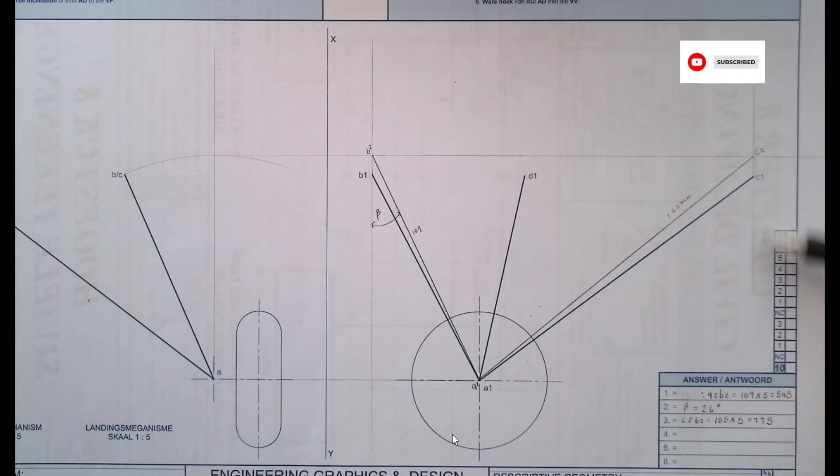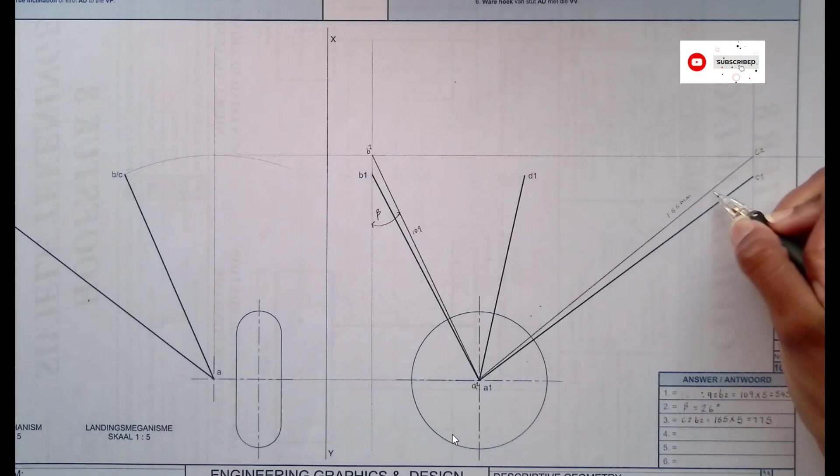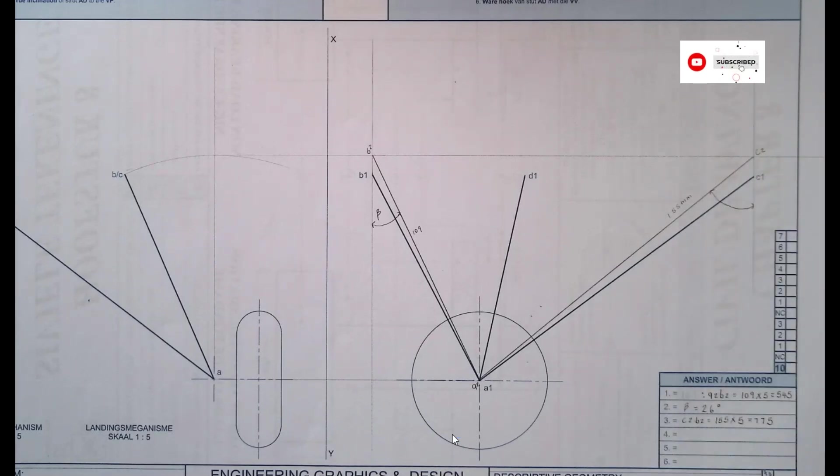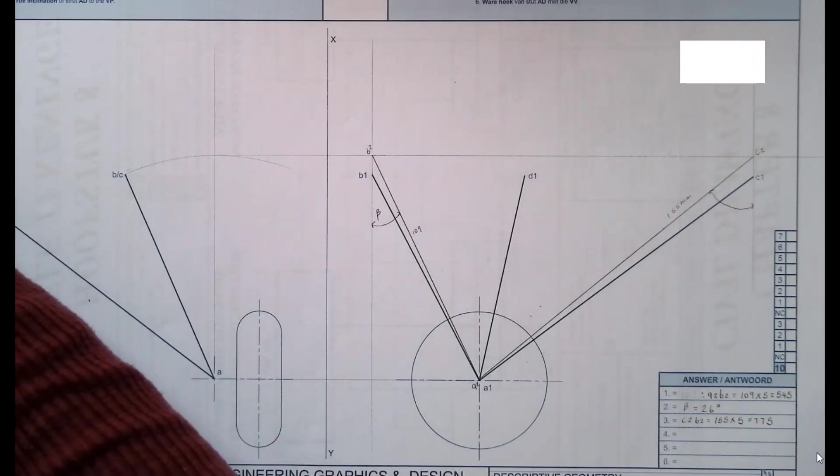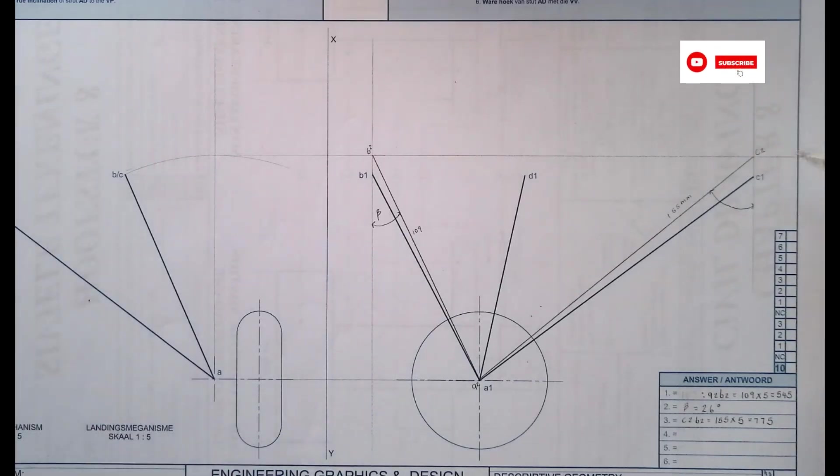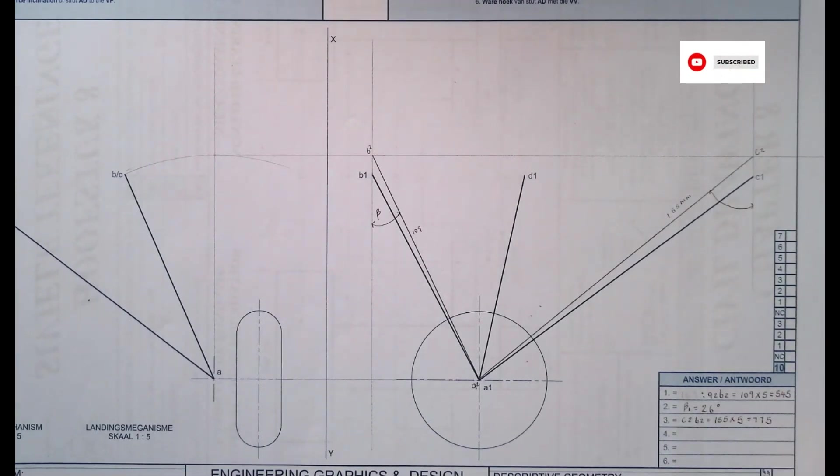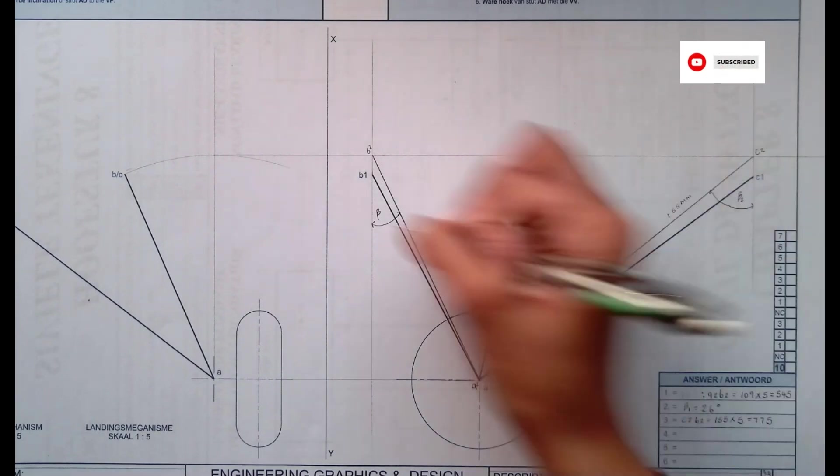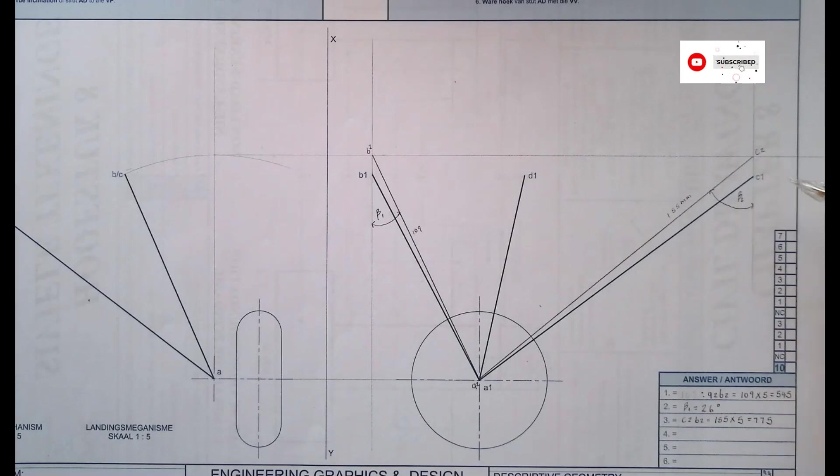And then now for my angle, I need to find the angle between the vertical plane and my line. So now this is the angle. That is the angle that I'm trying to find. So I will call the first one that I put here, beta 1. Then this one, we can just call it beta 2. That is my angle there.